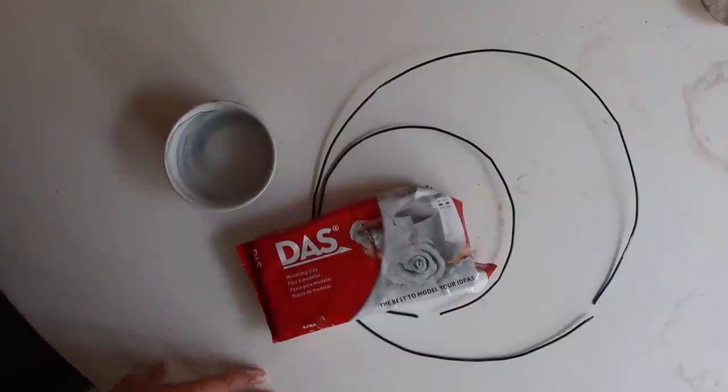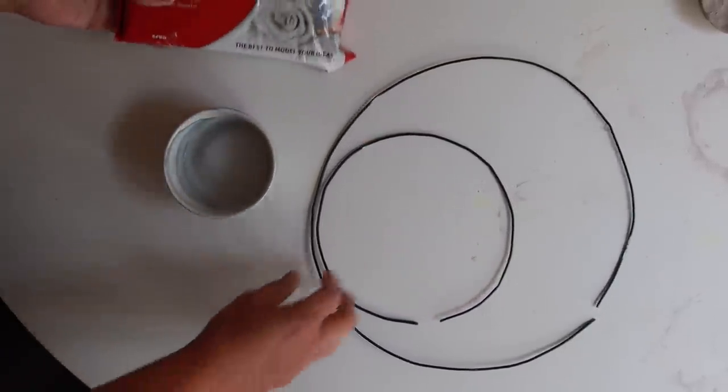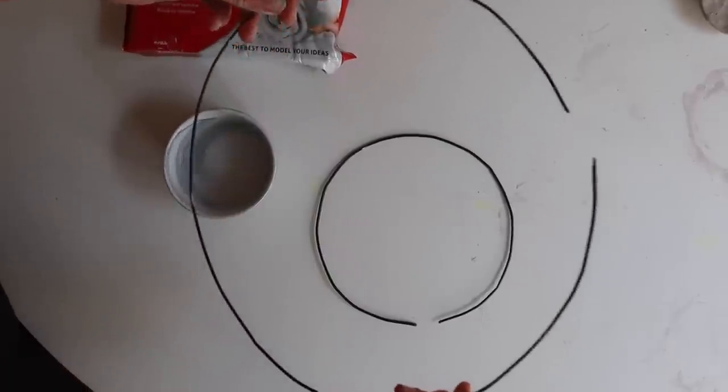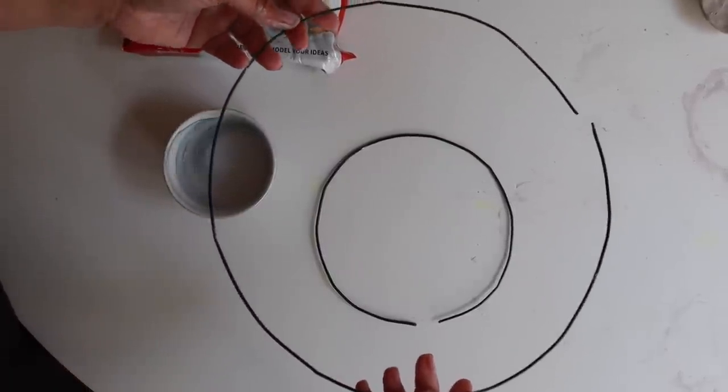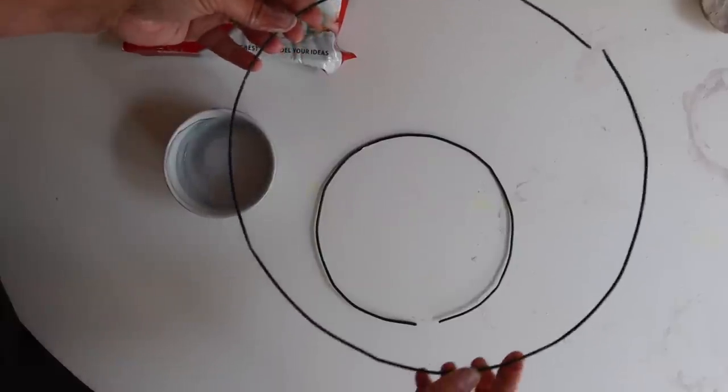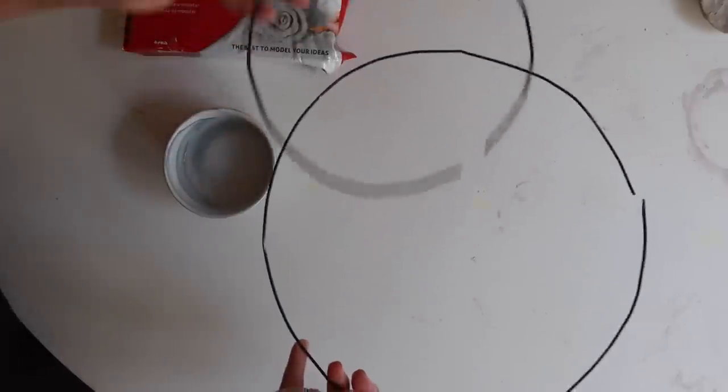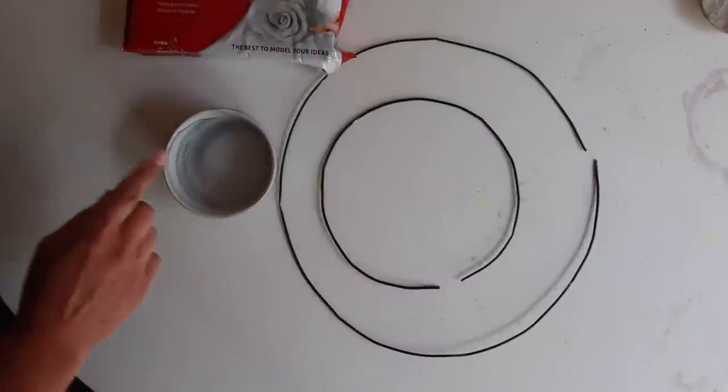So on to the next project. I am going to do another air dry clay project. I bought these floral arrangement wires. It actually was square. My husband cut them and he formed them into a round shape for me. So I have two sizes. I have a large and a small and my little cup of water.